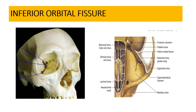The next fissure is the inferior orbital fissure. It is present between the lateral wall of the orbit and the inferior wall of the orbit. The major boundary is formed by the maxillary bone, with the palatine bone also forming part of its boundary.